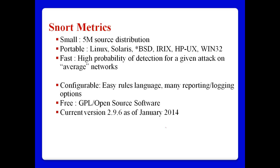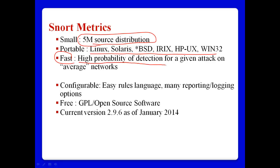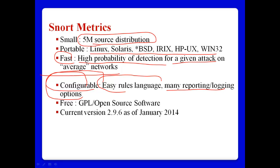Snort metrics: Snort is very small in size — normally around 5 megabytes when downloaded. It is portable, running on Linux, Solaris, BSD, IRIX, HP-UX, and Windows. It is fast, with a high probability of detection for a given attack on average networks. It is configurable with easy rules language and many reporting and logging options such as database support. It is free — GPL open-source software. The latest version is 2.9.6, released in January 2014.